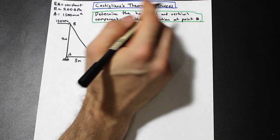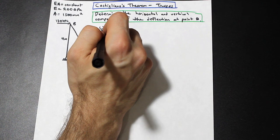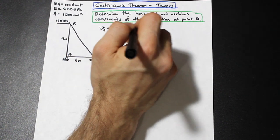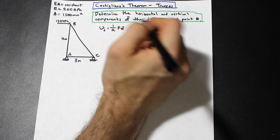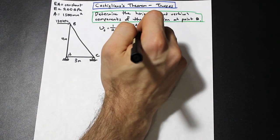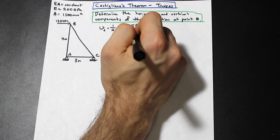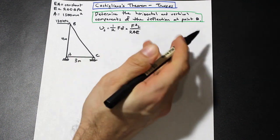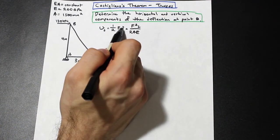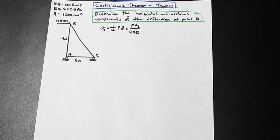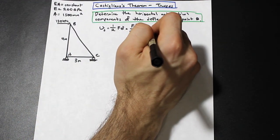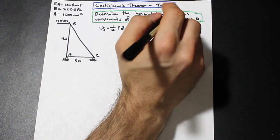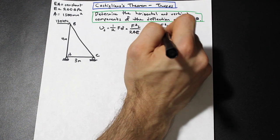For a member of a truss, the strain energy Uj of a member is one half times the force within that member times the axial deformation. That is simply equal to F²L over 2AE. We multiplied F times FL/AE, where FL/AE is the axial deformation for a member. For an entire truss, U is simply the summation of all the strain energy: the sum of F²L over 2AE.